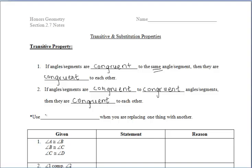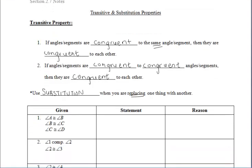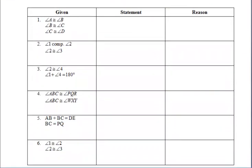Now, if we look at the asterisk here, we want to use the substitution property when you're physically replacing one thing with another. We typically use this if we see some type of equation or statement and then some type of equivalent statement below it. As you'll see in the examples below, we'll do some substitution as well as transitive properties.